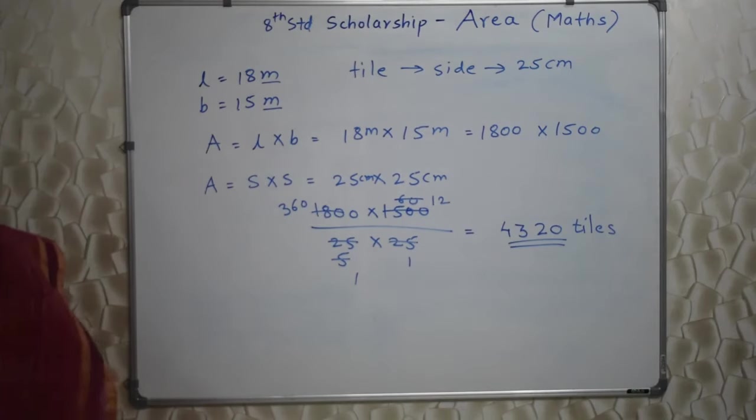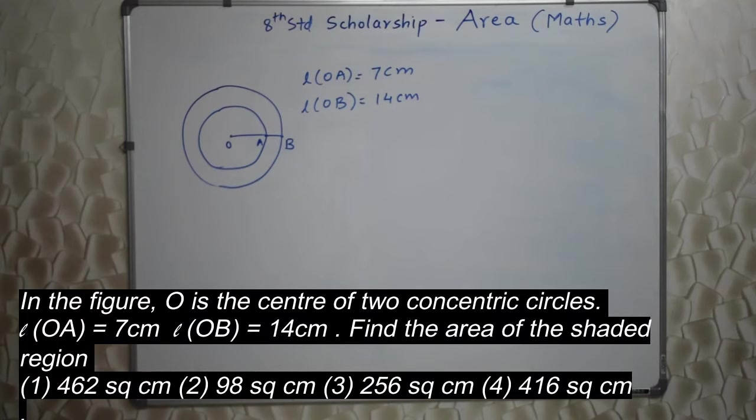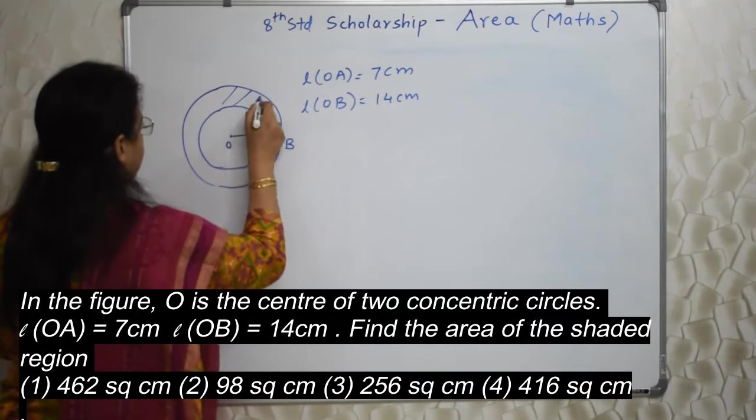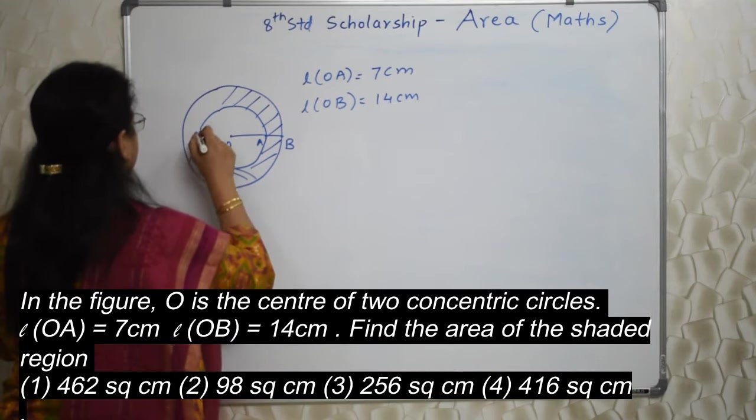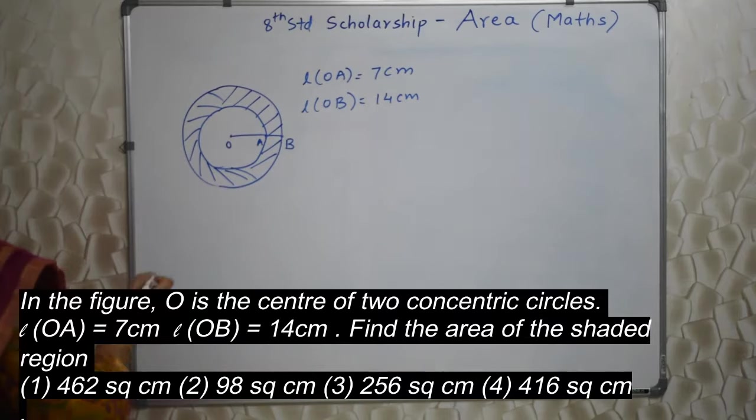Let's go ahead. Students, read the next sum properly. In the figure, O is the center of two concentric circles. Length of OA is equal to 7 centimeter, length of OB is equal to 14 centimeter. Find the area of the shaded region. Here I have drawn the figure. The shaded region is this entire thing. We need to find out the shaded region.